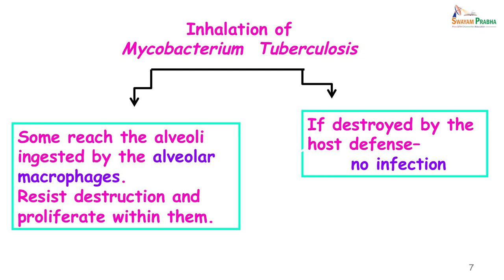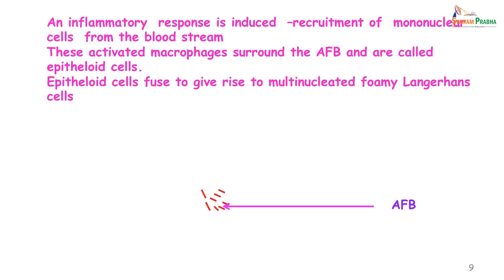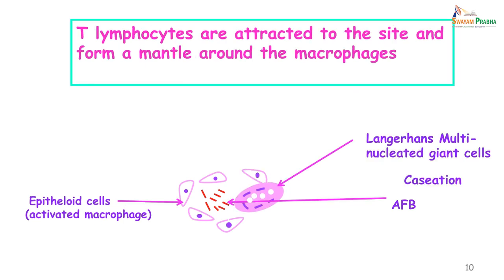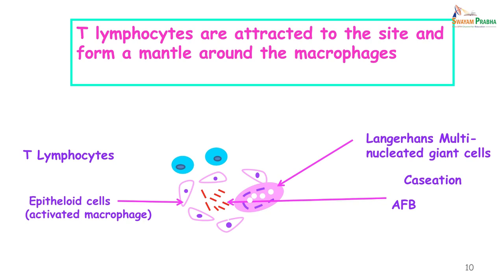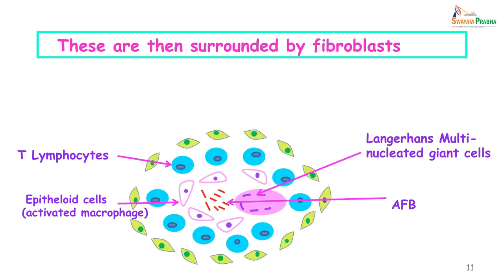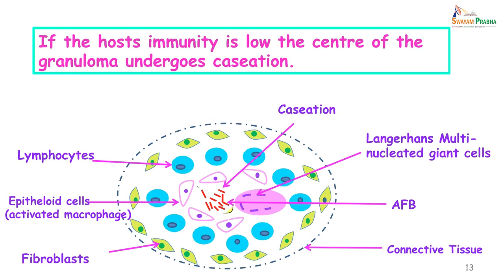Now what does this granuloma consist of? In the center we have the acid-fast bacilli. These are then surrounded by epithelioid cells, which are actually activated macrophages that have ingested the bacilli. These epithelioid cells stimulate an immune response and T lymphocytes arrive at the site. Many of the epithelioid cells will fuse together and give rise to a Langhans giant cell — a large cell with a horseshoe-shaped nucleus formed by the fusion of macrophages. Surrounding this are fibroblasts, and very rarely, if the infection is not contained, the central portion undergoes caseation.